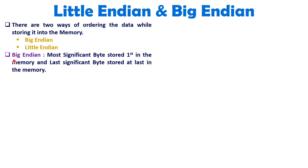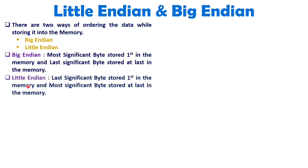When we talk about ordering of data when you store it into memory, there are two techniques: Big Endian and Little Endian. When we talk about Big Endian, the most significant byte will get stored first in the memory. So for example, if you have multi-byte data, then the most significant byte will get stored first, and at last you will be storing the least significant byte in the memory. With Little Endian, you will be storing the least significant byte first in the memory, and the most significant byte will be stored at last.